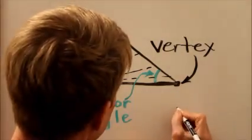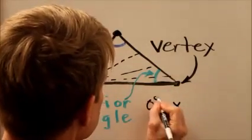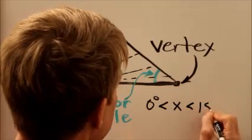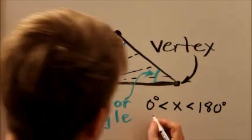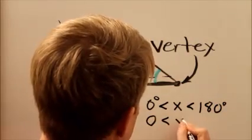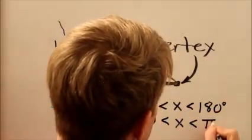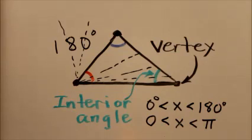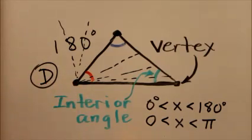So the range of angles—if we call the interior angle angle x—it has to be larger than zero degrees and it has to be less than 180 degrees at any given vertex. Well, that's not any of the answers here. We're talking about radians here. The equivalence in radians: 0 is less than the angle is less than π radians. So the correct answer is D.